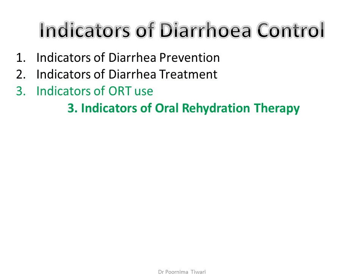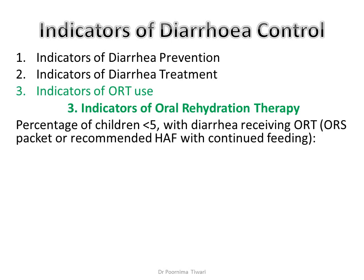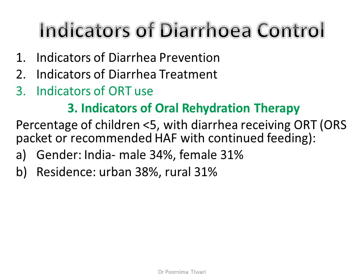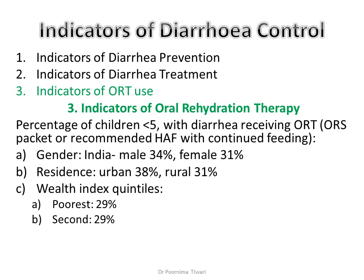Indicators of oral rehydration therapy use measure ORS packet use or recommended home-available fluids with continued feeding, broken down by gender, by residence (urban vs. rural), and by wealth index quartile — dividing the population into the lowest 25 percentile, second quartile, middle third quartile, and the richest 25 percent.